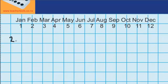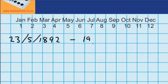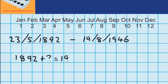We've got a person who was born on the 23rd of the 5th 1892 and they lived until the 19th of the 8th 1946. So I want to try and find out how old this person is. Well, I could write this question as 1892 plus how much equals 1946.